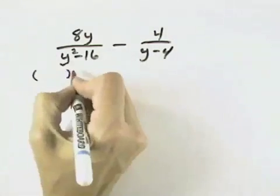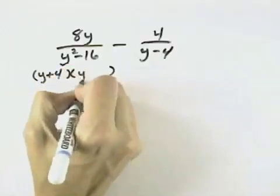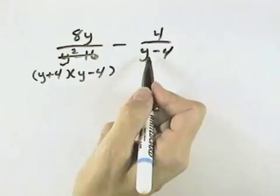In order to find the common denominator, we're going to have to factor this difference of squares into the sum and difference of its square roots, so that we can see that both of the fractions have y minus 4 in common.